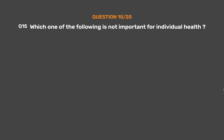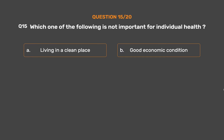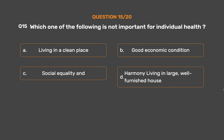Question number 15. Which one of the following is not important for individual health? Option A: Living in a clean place. Option B: Good economic condition. Option C: Social equality and harmony. Option D: Living in a large, well-furnished house.